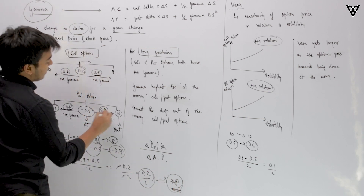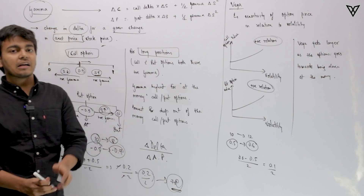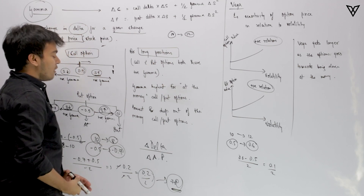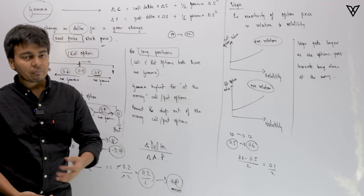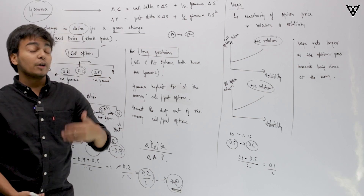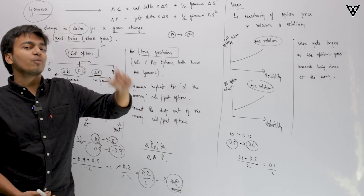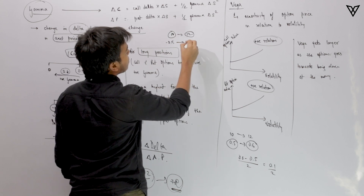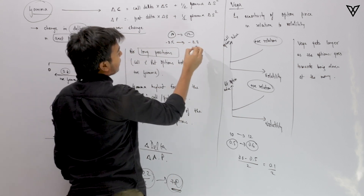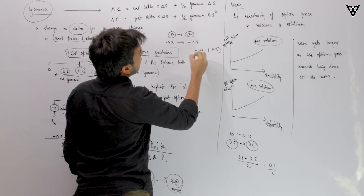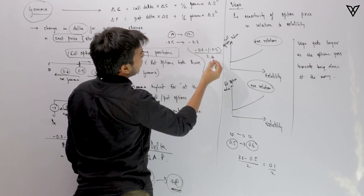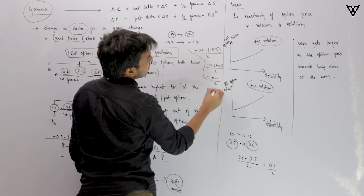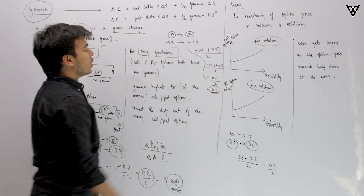If the stock price increases from 10 to 12, this leads to a reduction in the put option value, so we move towards out of the money and delta moves towards 0 — from minus 0.5 to minus 0.3. Gamma here is minus 0.3 minus minus 0.5 divided by 12 minus 10, which is 0.2 divided by 2, giving 0.1 — again a positive gamma.